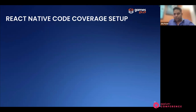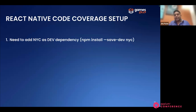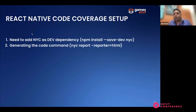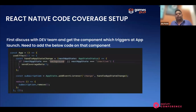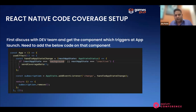Now let's jump to how we have integrated this tool with our application. You have to do two things. First, integrate NYC as a dev dependency in your React Native code using the install command shown. The second command generates the code coverage after your testing runs. There is one limitation: you have to add some code in your application that will only be active when you create a debug mode build, not a release build. Add a condition — if debug is true, enable this code — otherwise it will go to production, degrade performance.